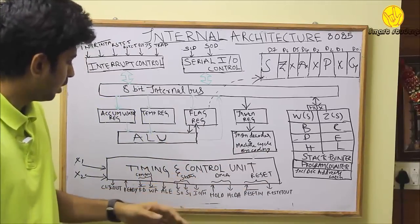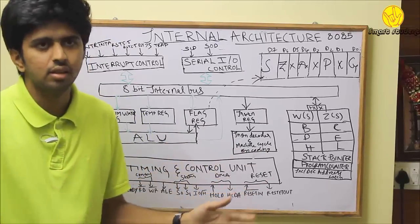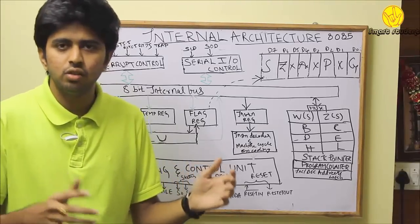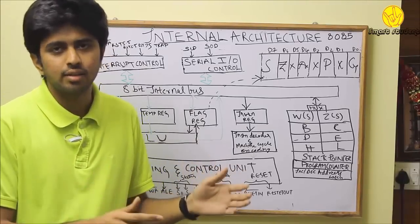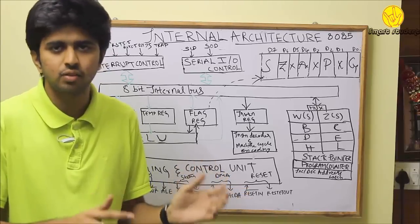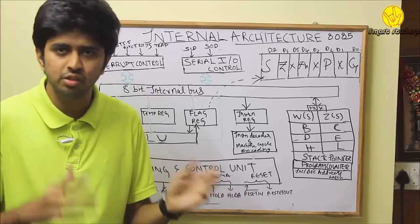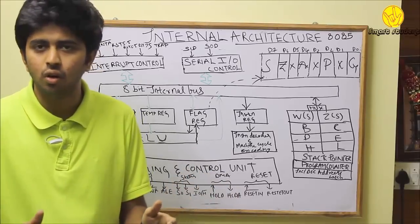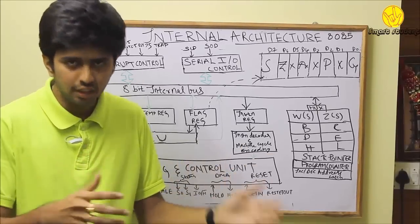Coming to the S0 and S1, S0 and S1 are called status signals. When S1 and S0 are 00, HLDA is accessed. When S1 and S0 are 01, read operation takes place. When S1 and S0 are 10, write operation takes place. When S1 and S0 are 11, op-code fetching takes place.